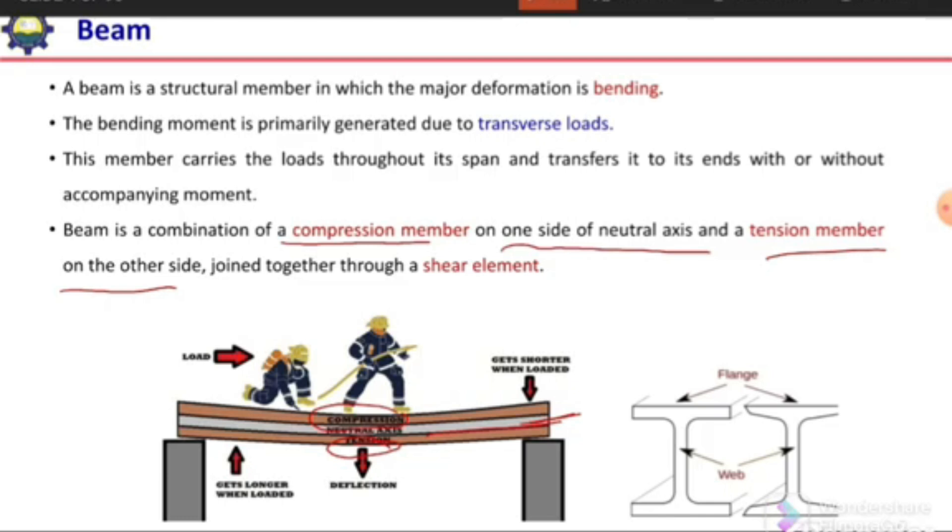This lightly shaded area shows the neutral axis or the area where there is no stress. The top will be under compression and the bottom will be under tension when the beam is subjected to the transverse load. This compression member and tension member are joined together through a shear element.